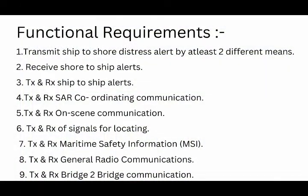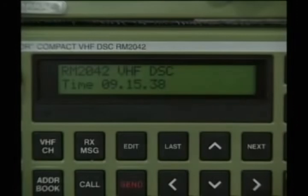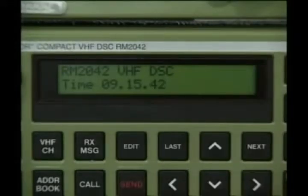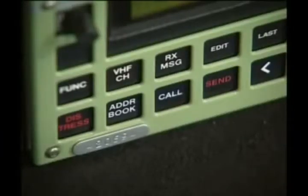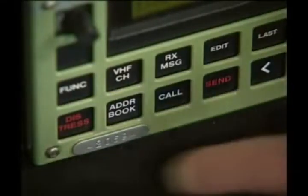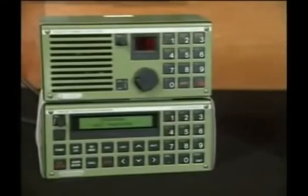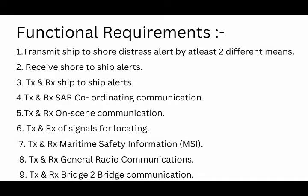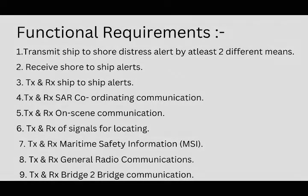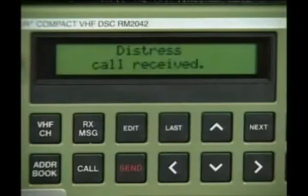Point number nine: transmitting and receiving bridge-to-bridge communication. We use VHF channel 16 for bridge-to-bridge routine communication. Now we have completed the functional requirements — there were totally nine points. I gave you an example of each point. When you see this video for the first time, take some patience, go through these nine points, write them in order, and try to memorise them. I am sure this will be asked by many surveyors.